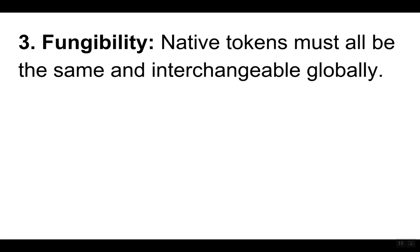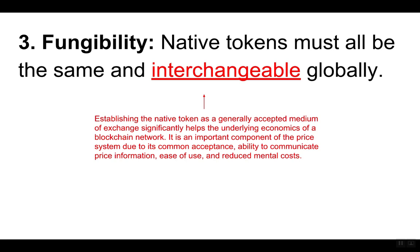Three, fungibility. Native tokens must all be the same and interchangeable globally. Establishing the native token as a generally accepted medium of exchange significantly helps the underlying economics of a blockchain network. It is an important component of the price system due to its common acceptance, ability to communicate price information, ease of use and reduced mental costs.